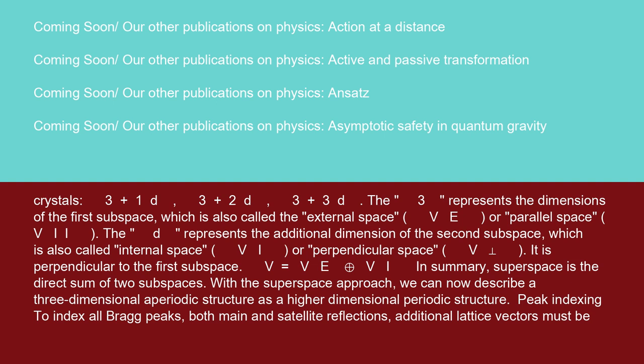Superspace dimensionalities of aperiodic crystals: 3+1D, 3+2D, 3+3D. The 3 represents the dimensions of the first subspace, which is also called the external space (VE) or parallel space (V||). The D represents the additional dimension of the second subspace, which is also called internal space (VI) or perpendicular space (V⊥). It is perpendicular to the first subspace. V = VE ⊕ VI. In summary, superspace is the direct sum of two subspaces.